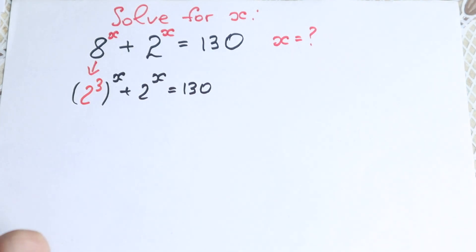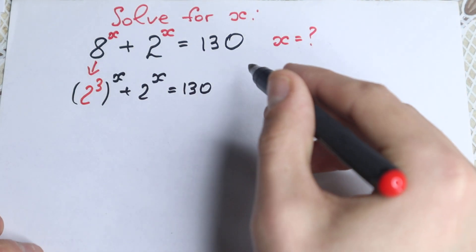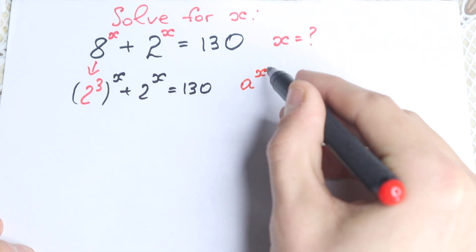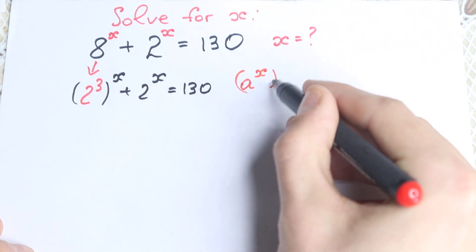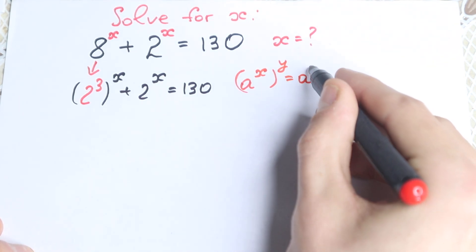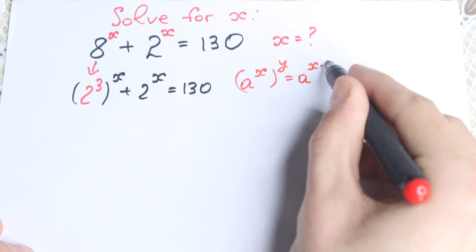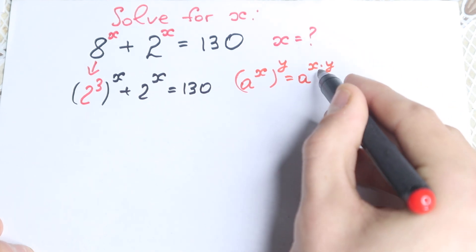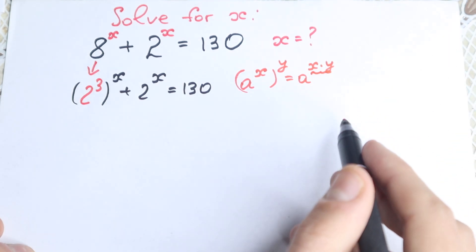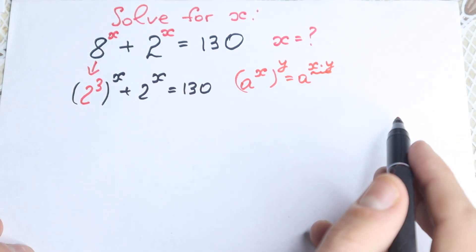Right now we need to know a really important power rule. If we have 8 to the power x, raised to the power y, it equals 8 to the power x times y. So we just multiply these powers right here. Let's do this.